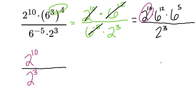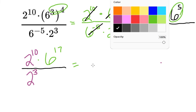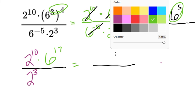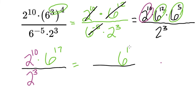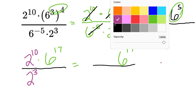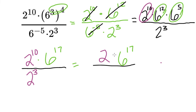Now let me deal with my 6s. That's going to be combining 6 to the 12th and 6 to the 5th, so that gives us 6 to the power of 17. Now when I go to finish this problem, I only have one base 6, so I already know where that goes. My base 6 to the power of 17 stays in the numerator because that's where it already is. Then I look at my 2s — I've got a 10 and a 3. My 2 stays in the numerator because the power of 10 is bigger, so it's 2 to the power of 10 minus 3, which is 2 to the power of 7.